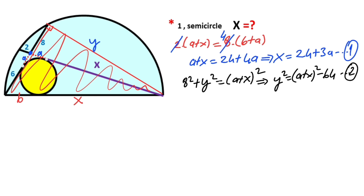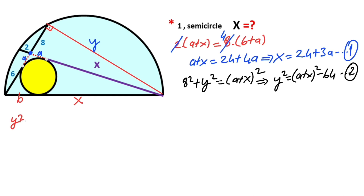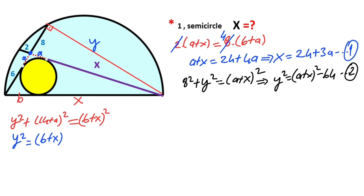If you focus on the biggest triangle, we can also apply the Pythagorean theorem: y squared plus (14 plus a) whole squared equals (6 plus x) whole squared. So y squared equals (6 plus x) squared minus (14 plus a) squared. This is the third equation.